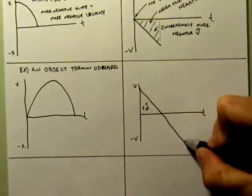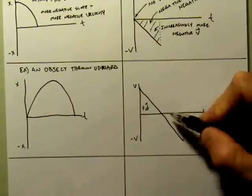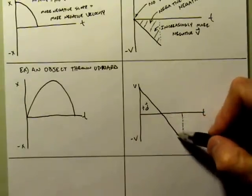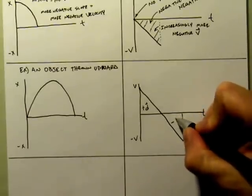And then what happened was I hit 0 velocity and began to move into the negative velocities, or the negative directions. So this is going to be negative d.